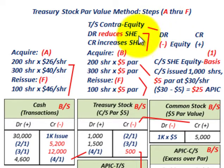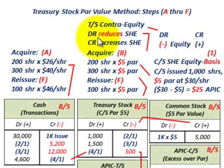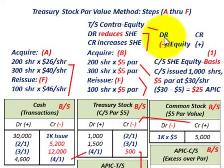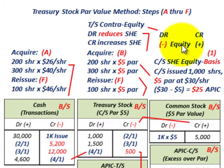Before we get into those steps, let's define treasury stock. Treasury stock is a contra equity account where a debit, which increases our treasury stock, reduces our shareholder's equity. A credit, which is a minus amount to our treasury stock account, increases our shareholder's equity. A debit reduces our equity, whereas a credit increases our equity — that's what we mean by a contra equity account.